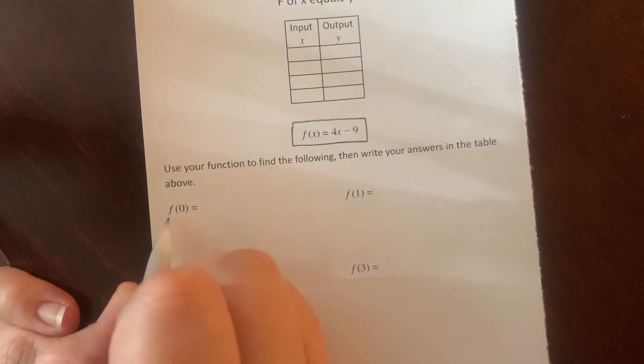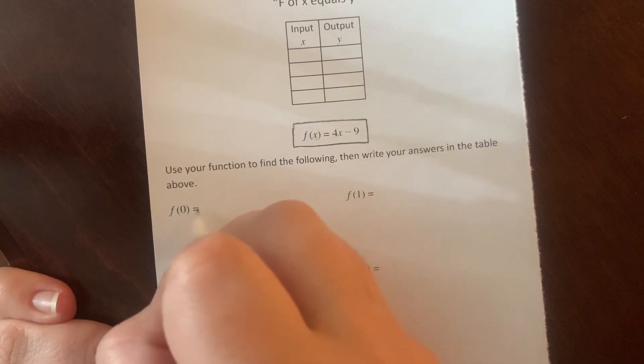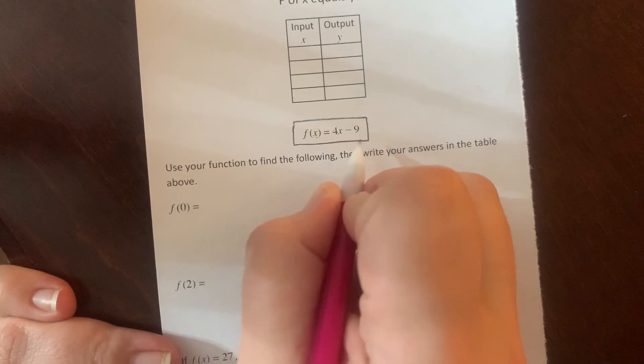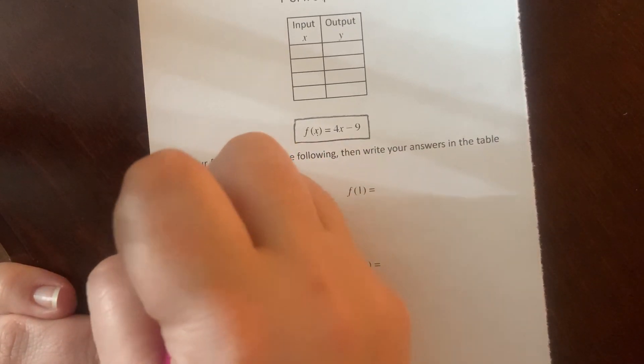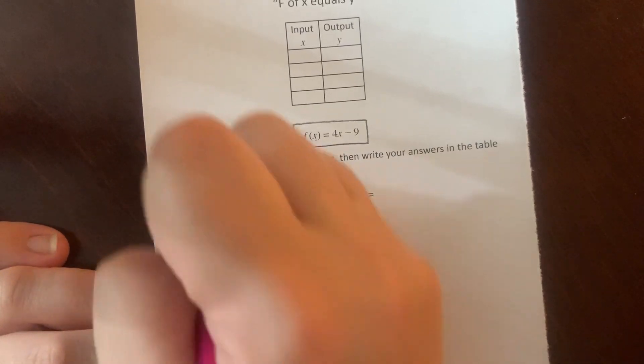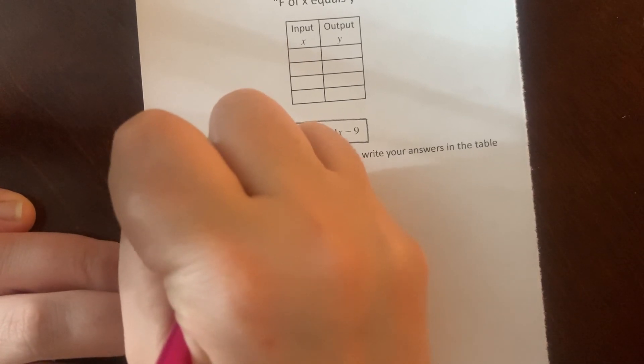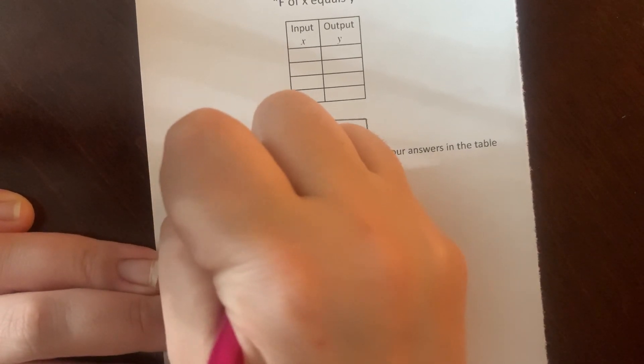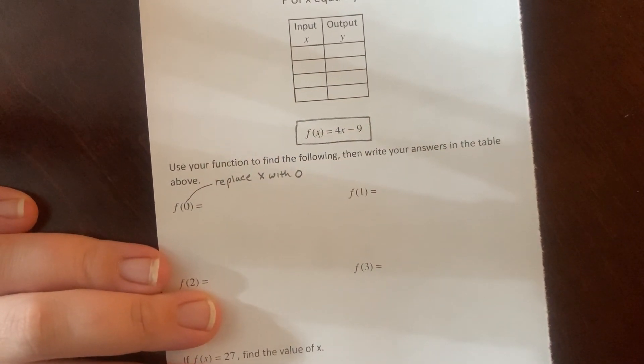So when I look at this F of 0, this 0, you'll notice, is now in the place where X was. So that means I'm going to replace all the X's with 0. My input is going to be 0. So this 0 here, to make a note of that, says to replace our X with a 0.